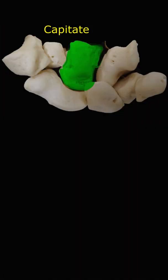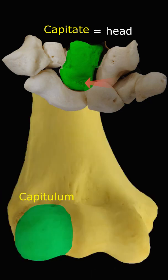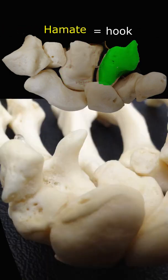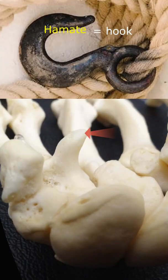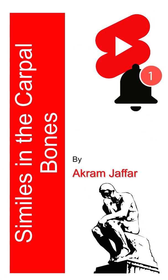The capitate is the largest of the carpal bones. It has a rounded portion, or head, hence the name. The capitulum of the humerus is diminutive of caput, meaning a small head. The hamate means hook, because this bone has a hook-like process — the hook of the hamate. Which other bones in the body are named after their shape or location?